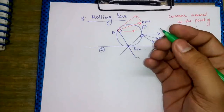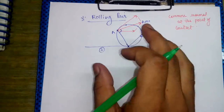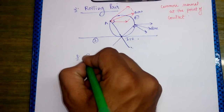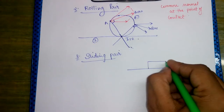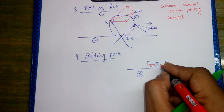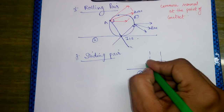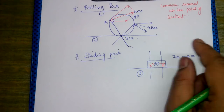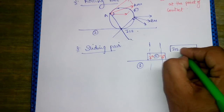For a sliding pair, link 1 is fixed and link 2 slides. The velocity of point A and velocity of point B are both parallel to the sliding direction. Drawing perpendiculars to these velocities, they are parallel and never meet — so I12 lies at infinity, in a direction perpendicular to the sliding surface.